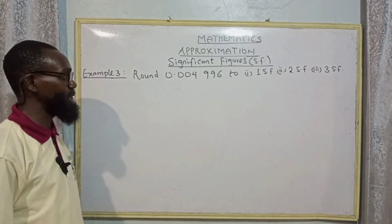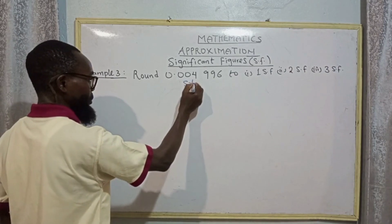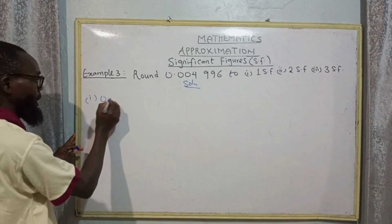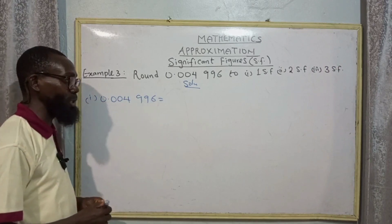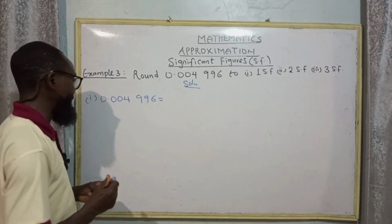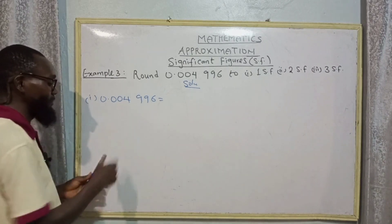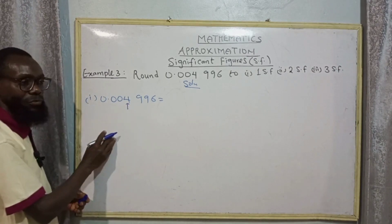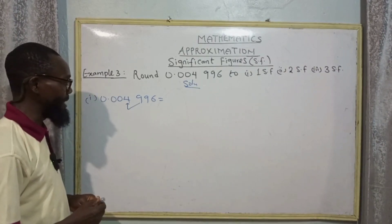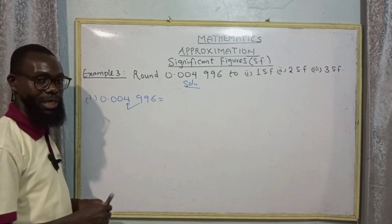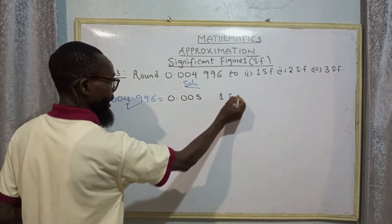Example three: round 0.004996 to the following significant figures. For one significant figure — don't forget these leading zeros are non-significant. The first significant figure is four. After determining the first SF, check the value to the right: nine. Nine rounds up to one, add one to four making five. We have 0.005 to one significant figure.